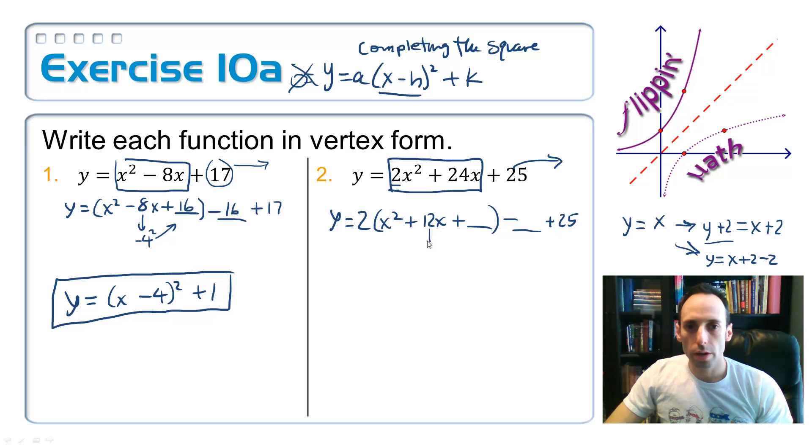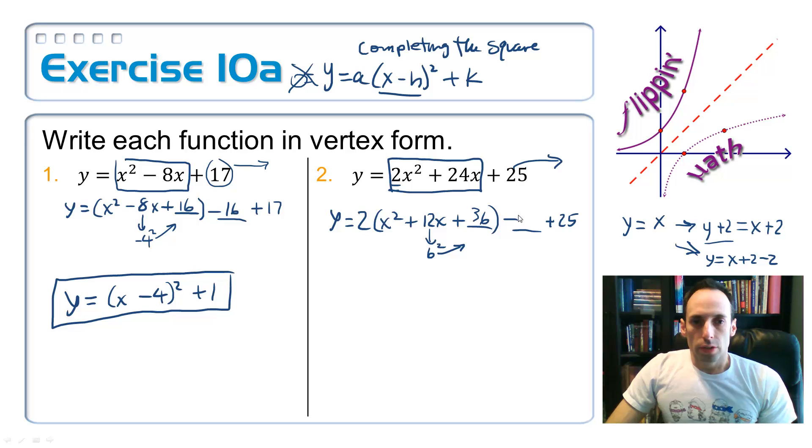Now let's complete the square here. Take half of that, 6, squared up, 36. So should I just subtract 36 out here?